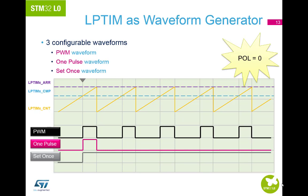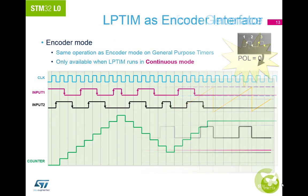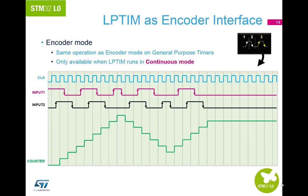The two 16-bit auto-reload and compare registers are used to generate several different waveforms on the LP-TIM output as shown. The free modes require that the auto-reload register value be strictly greater than the compare register value. The encoder interface mode allows handling signals from quadrature encoders used to detect angular position of rotary elements, and acts simply as an external clock with direction selection.